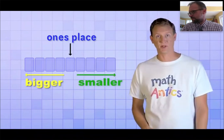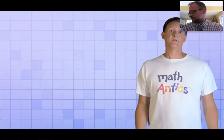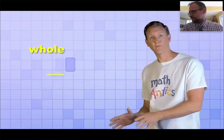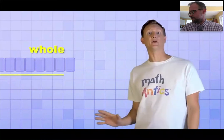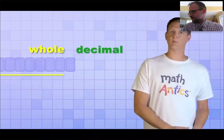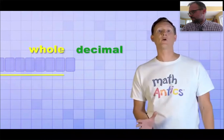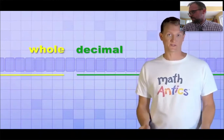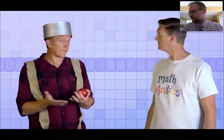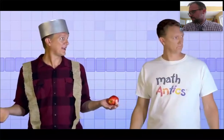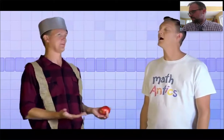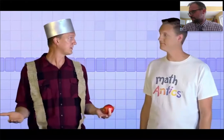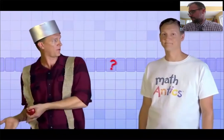And just like the whole number places can go on forever to the left counting bigger and bigger groups, the decimal number places can go on forever to the right, counting smaller and smaller parts or fractions. But if number places go on forever in either direction, then how do we know which place is which? If they're invisible, how do we know which digit goes in which place?